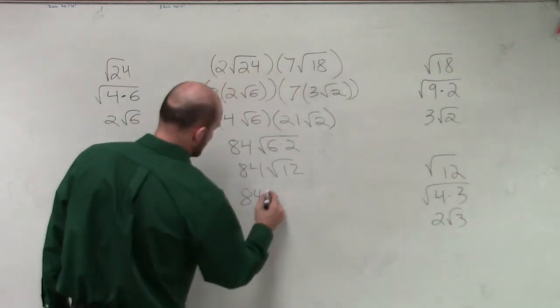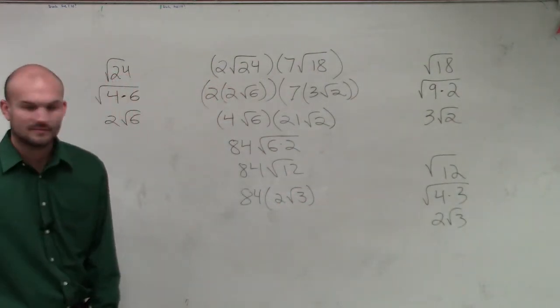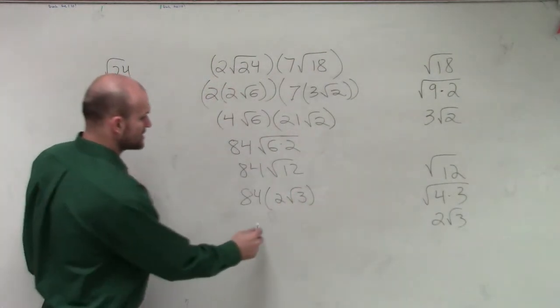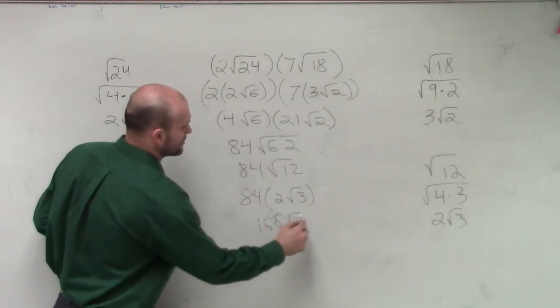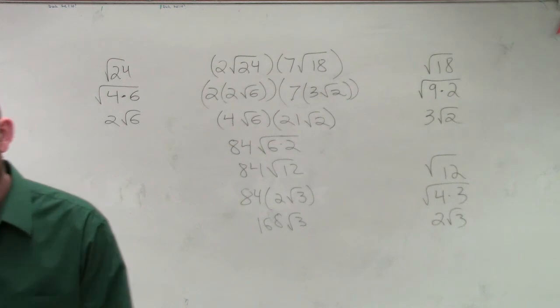So then I say, 84 times 2 radical 3. Well, 84 times 2 is 168 radical 3, OK?